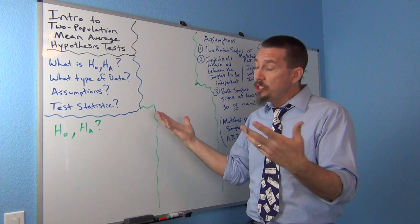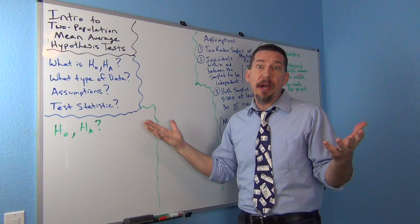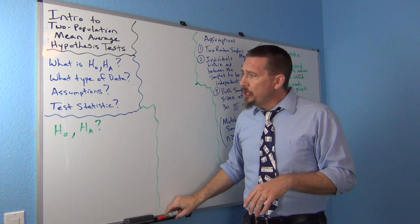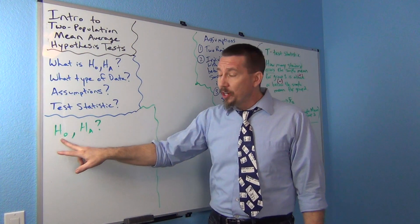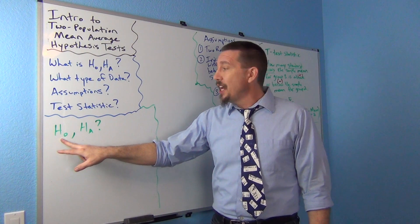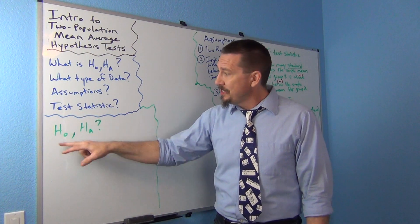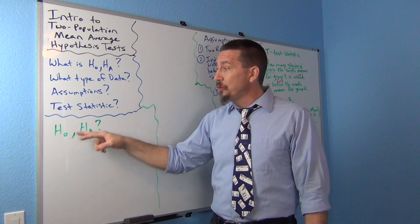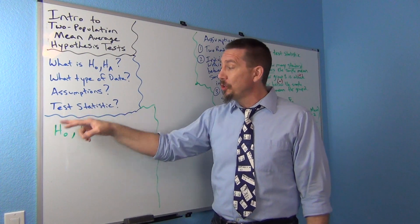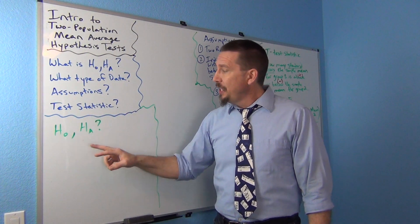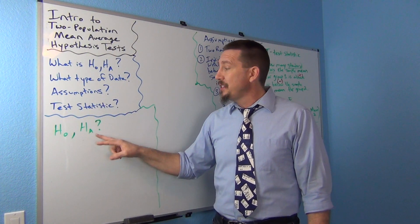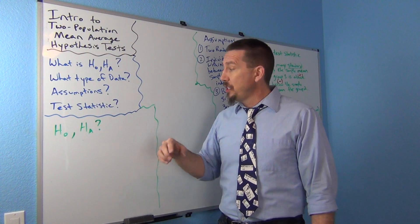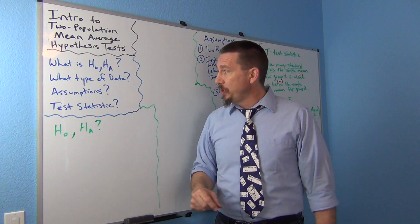The first question: what do the null and alternative hypothesis look like? H0, the null hypothesis, is a statement about the population that involves equality. The alternative hypothesis is a statement about the population that does not involve equality.